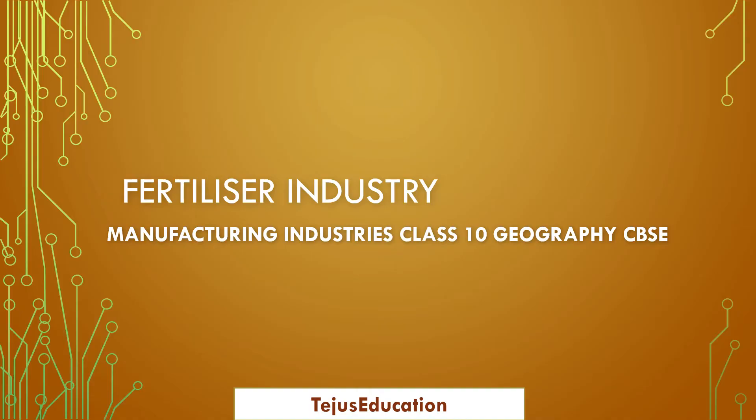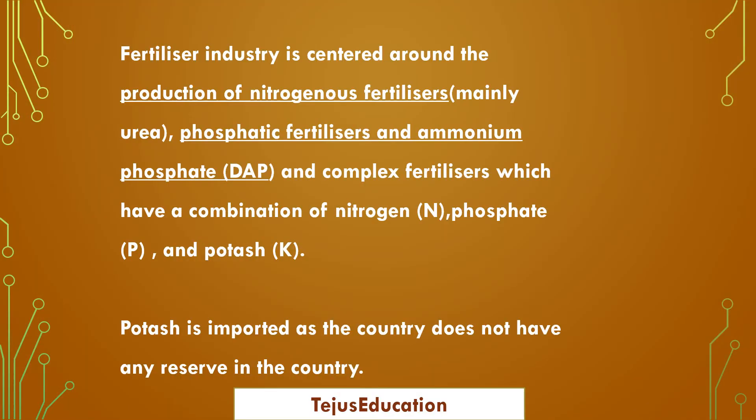Such as aluminium, iron and steel — those raw materials are bulky and heavy. Now let's learn where the fertilizer industry is located. Fertilizer industry is centered around the production of nitrogenous fertilizers, phosphatic fertilizers, and ammonium phosphate.